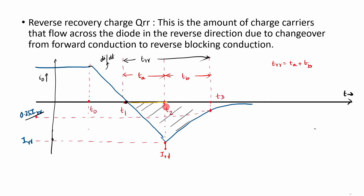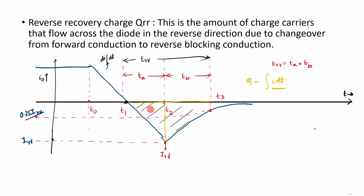Let us divide the graph into two portions. One is from t1 to t2 — that is the first portion of the graph — and from t2 to t3 you have the second part of the graph. Now you know from engineering circuit analysis that charge is the integral of current. The basic idea of integration is nothing but area. So if you know the current graph — the variation of current with respect to time — and you want to find the charge, you find the area under the curve.